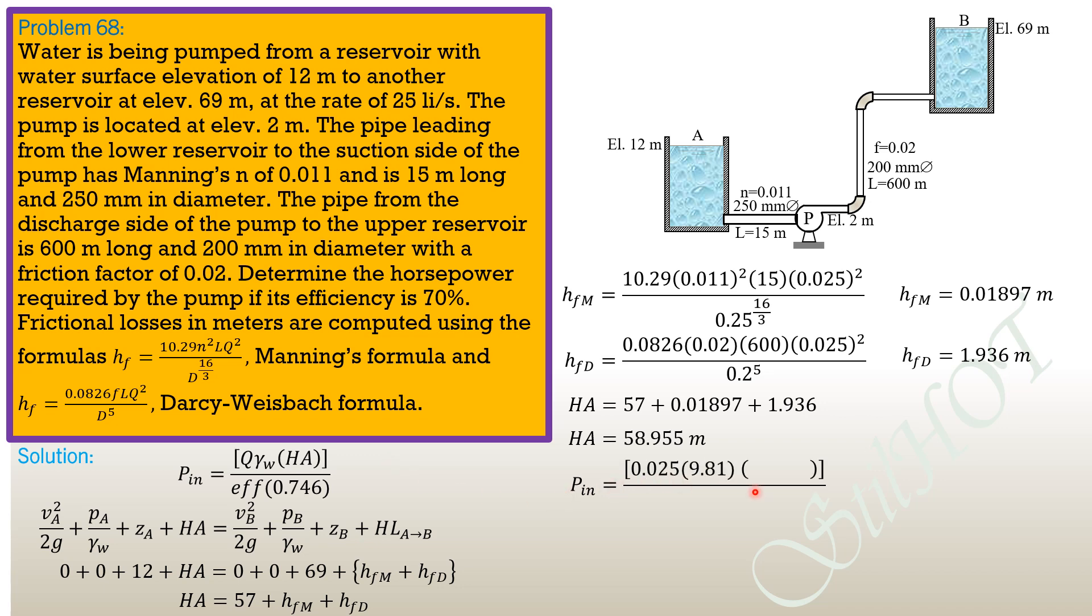Power_in = 0.025 × 9.81 × 58.955 / (0.7 × 0.746). That's kilowatts divided by efficiency to make it power input, then divided by 0.746 to convert to horsepower. So Power_in equals 27.69 horsepower.